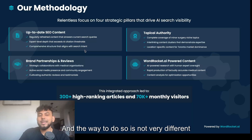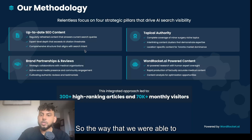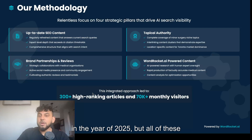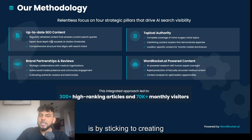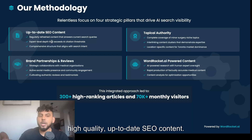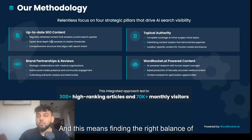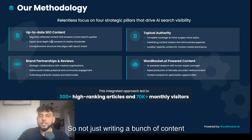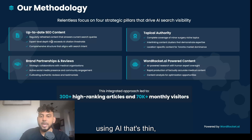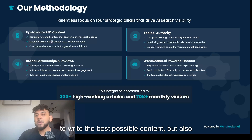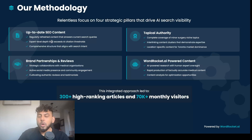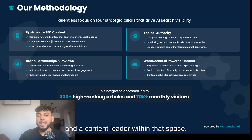The way to do so is not very different from traditional SEO. The way we were able to exponentially grow this website in 2025, through all of these core updates, is by sticking to creating high-quality, up-to-date SEO content. This means finding the right balance of volume and quality — not just writing thin AI-generated content, but taking the time to have a methodology to write the best possible content and become a thought leader within that space.